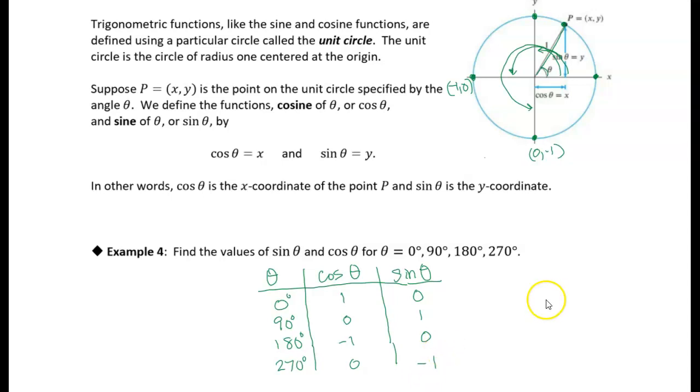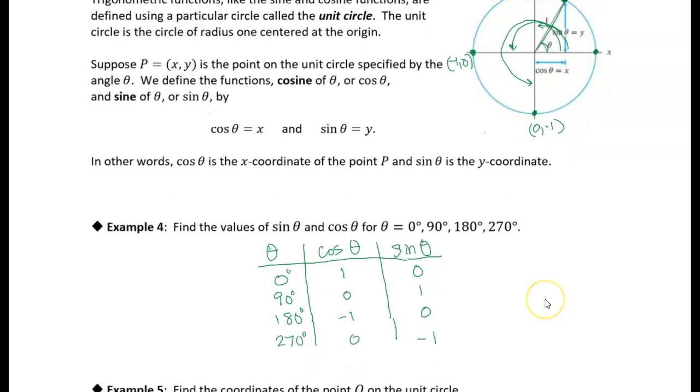All right, now we could keep going. If we go another 90 degrees, we'll be at 360, right? Now, it didn't ask for this, but we can also calculate what it would be at 360, right? But at 360, we're just back. We're just back to where we were at 0. So we get the same point, 1, 0. Okay, so we can add that point if we want to at 360 degrees. All right, well, I will meet you for the next example.